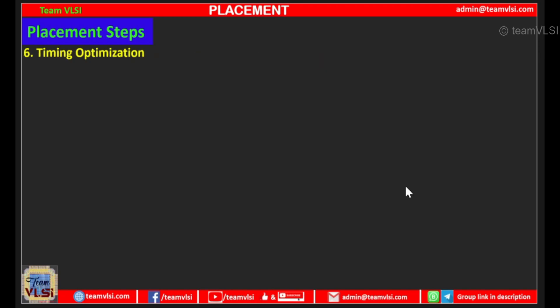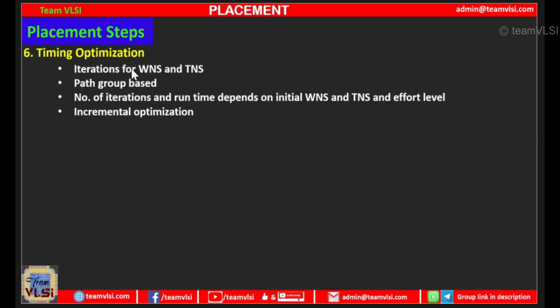The next step is timing optimization. The tool runs various iterations to get optimal WNS and TNS. First the tool does iterations for reducing WNS and TNS, and all these efforts are based on our path groups and the effort level we have set. The number of iterations and run time depend on the initial WNS, TNS, and effort level. We can also run incremental optimization here.